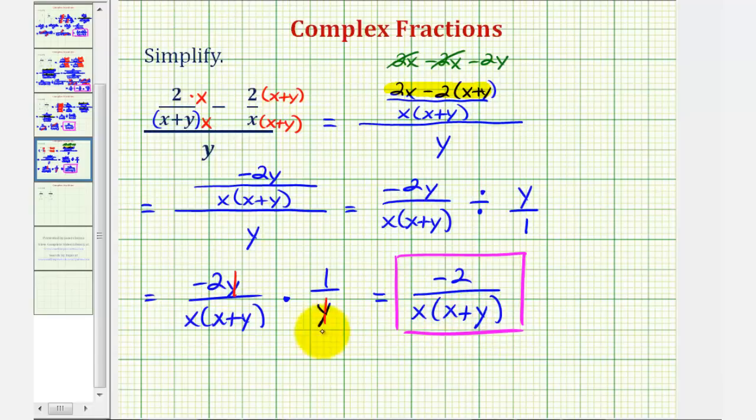We have to enter this into the computer as negative two divided by, and then a set of parentheses for the denominator. And our denominator is x times the quantity x plus y.